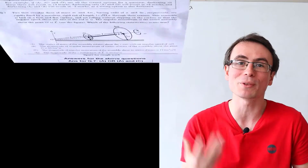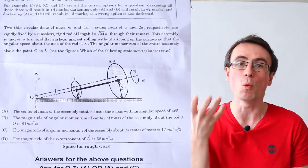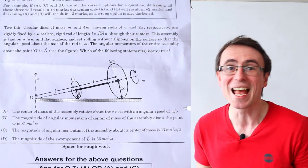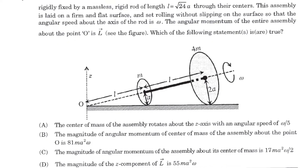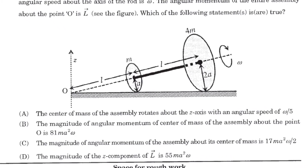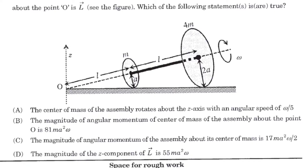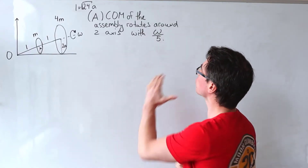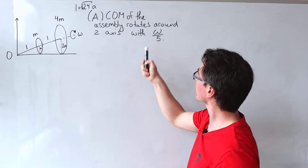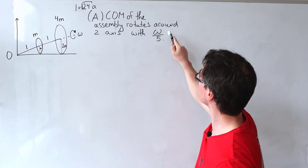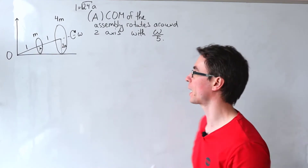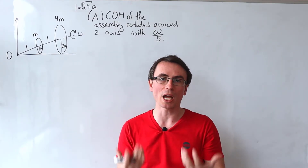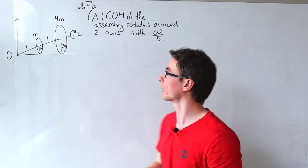This question involves some of the trickiest parts of physics, one of which is rotational mechanics — very hard to visualize — and multiple choice questions where we have to decide which statements are true. Let's examine the first statement: the center of mass of the assembly rotates around the z-axis with an angular speed of ω/5. It's really important to understand that in this problem there are two types of rotations happening.